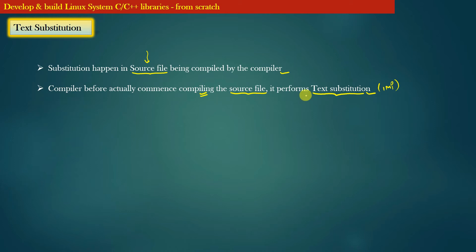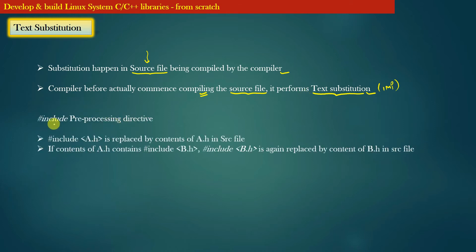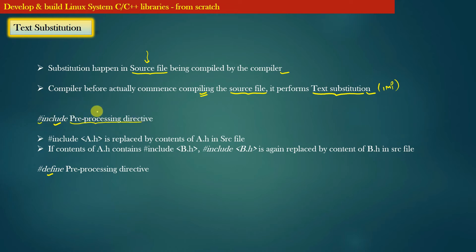This text substitution is accomplished by two pre-processing directives: the first is #include and the second is #define. In C or C++, any statement that starts with a hash symbol is called a pre-processing directive. It is called pre-processing because these statements are executed before the compiler actually starts compiling the source file.